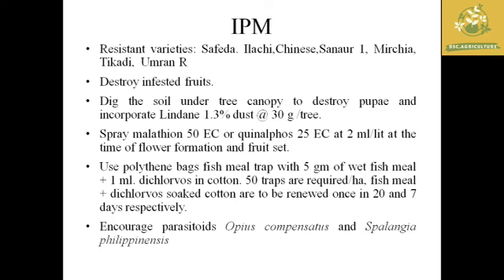Major management practices for fruit fly include use of resistant varieties, destruction of infested fruits where maggots are found before they go for pupation, and spraying malathion 50 EC or quinalphos 25 EC at 2 ml per liter during flowering and fruit set. Encouraging parasitoids like Opius compensates and Spalangia philippinensis in the field also helps control fruit fly.